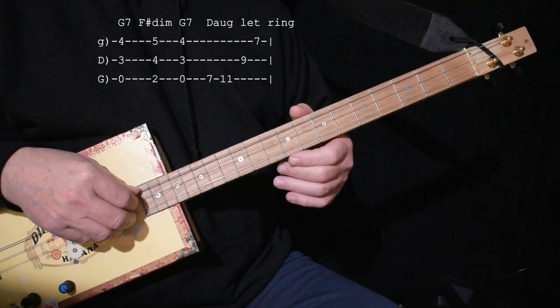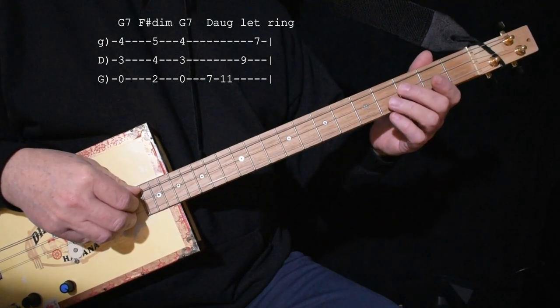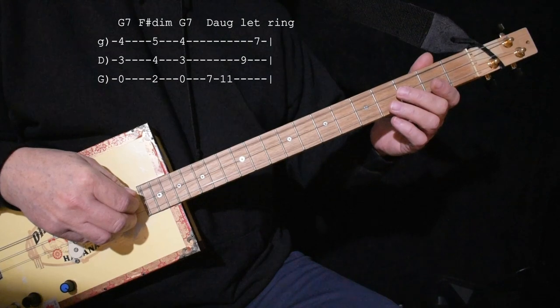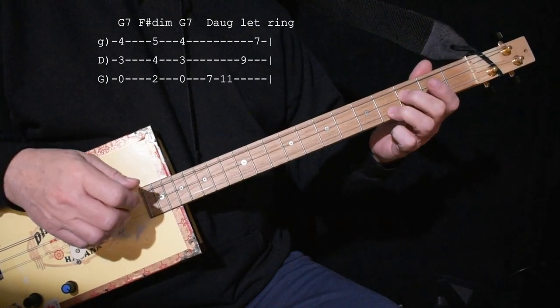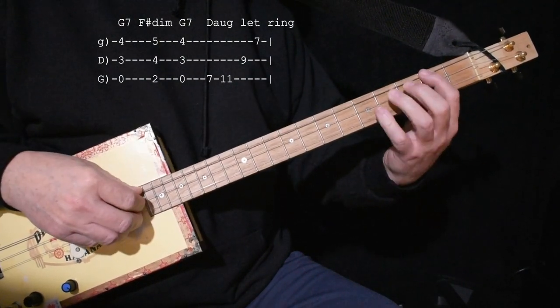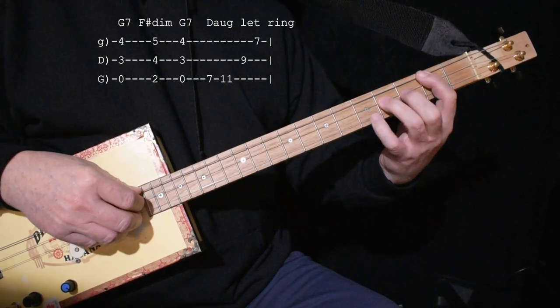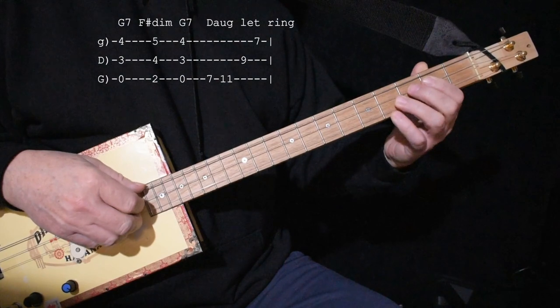We're going to start with the turnaround that begins the song. That starts at G7, which is open low string, 3 on the middle, 4 on the high. Then we're going to do F sharp diminished, which is 2, 4, 5 on the high. And then back to G7.